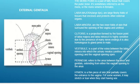The mons pubis is basically a fatty tissue that covers the pubic bone. The mons pubis can also be referred to as 'mons' in short, or 'mons veneris'.